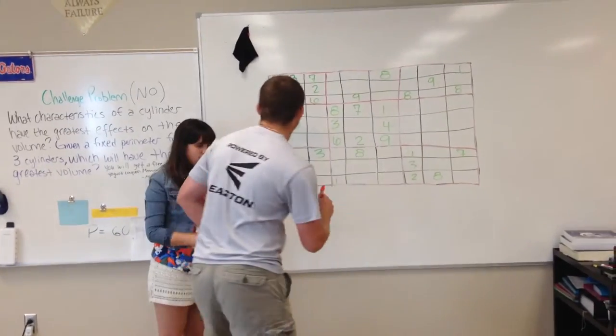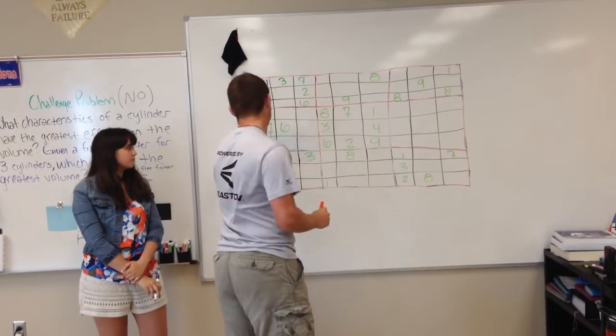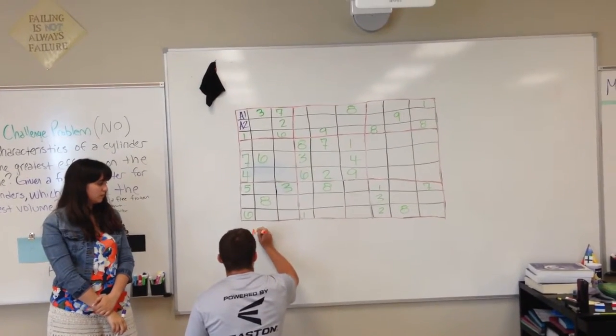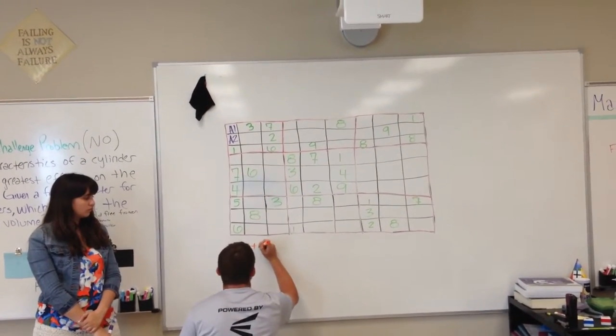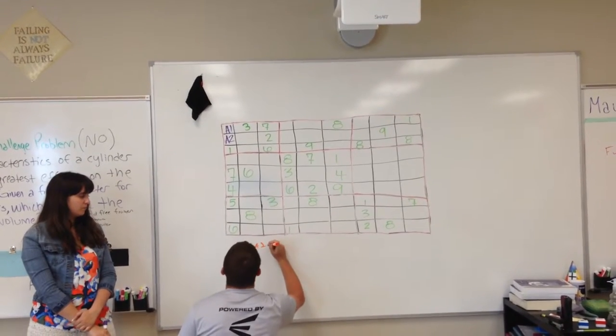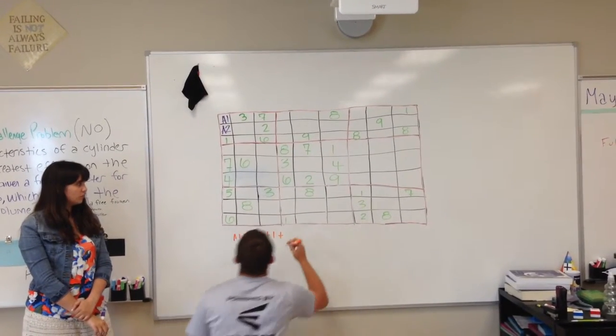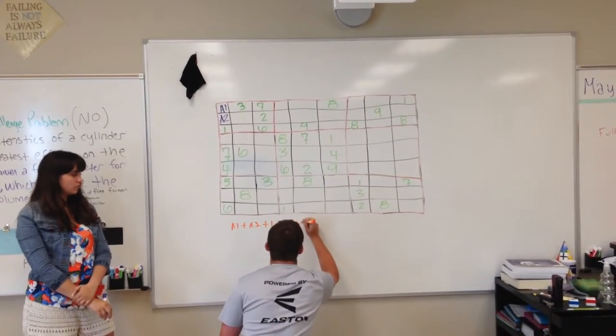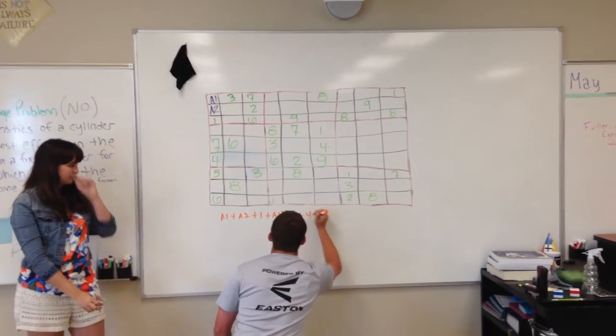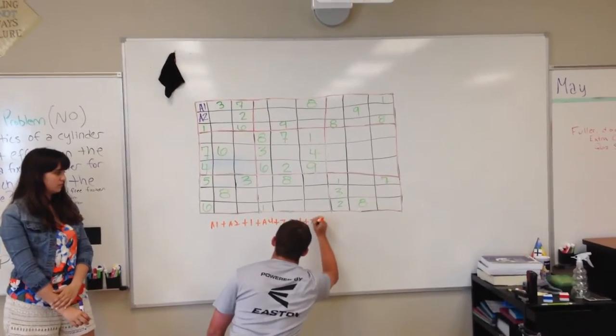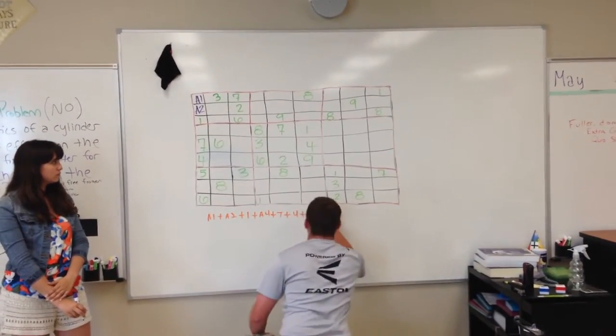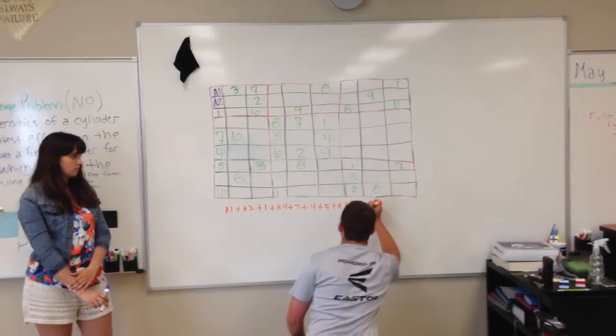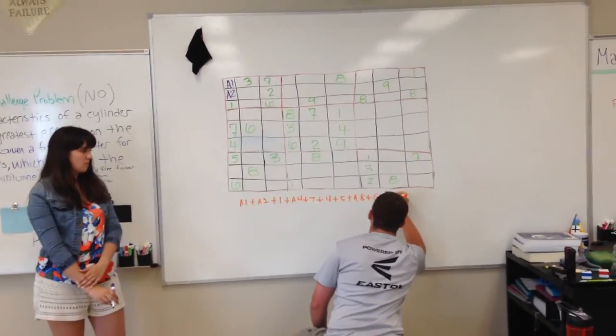Now for the math part about this. You would add up all the numbers, so it would be A1 plus A2 plus 1 plus A4 plus 7 and so on. And that should equal up to 45.